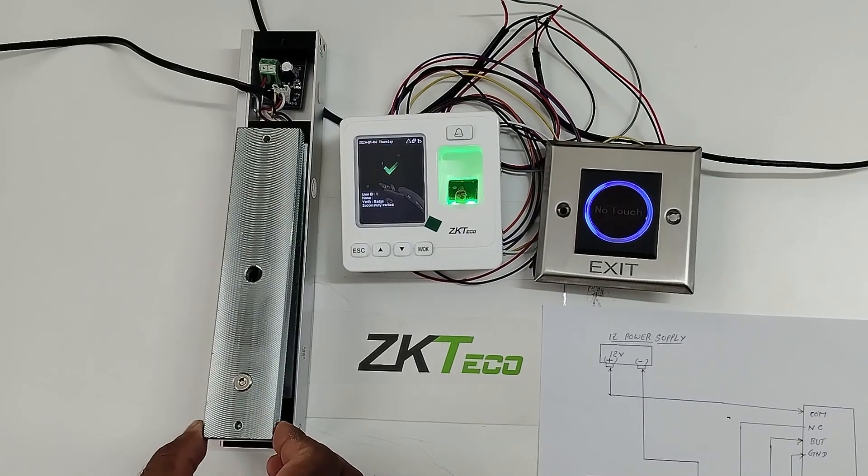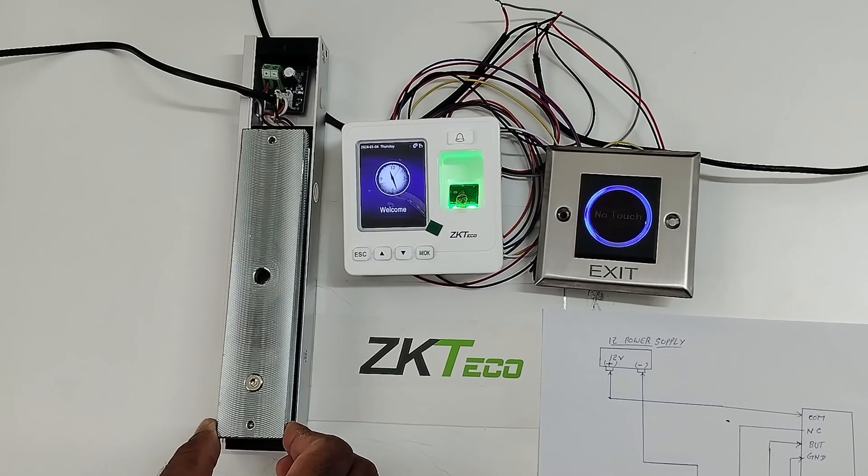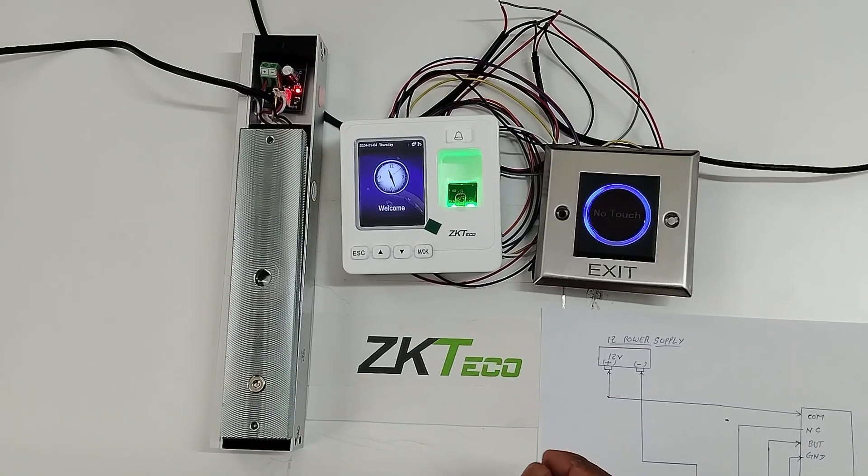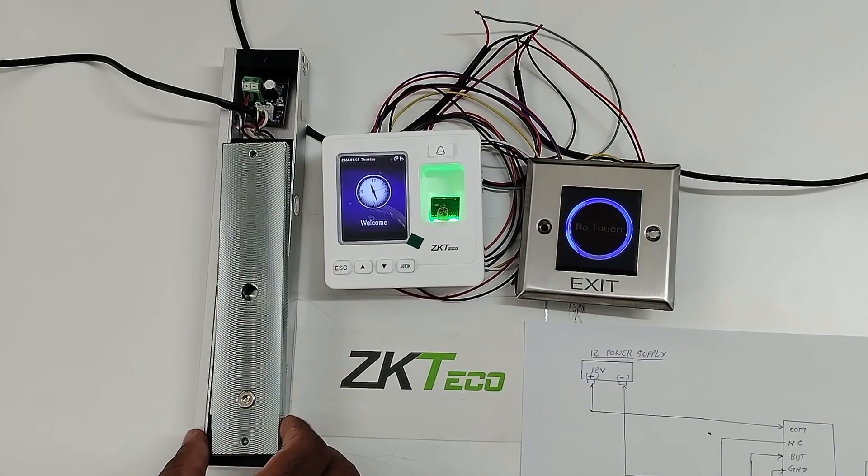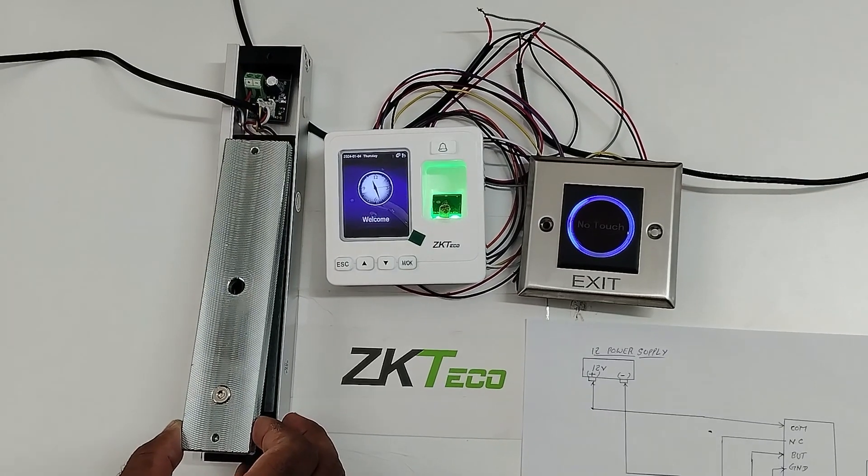EM lock opened. I have set the timing for 5 seconds. It will close after that time. Now I am using the exit button for the out purpose. Again EM lock opened. You can see the indicator also.